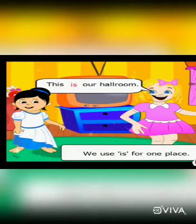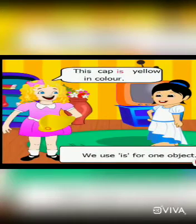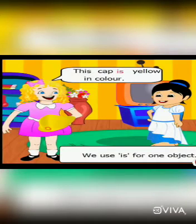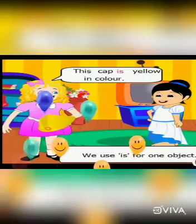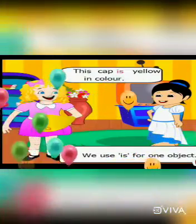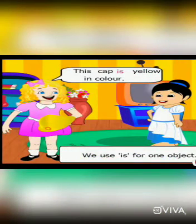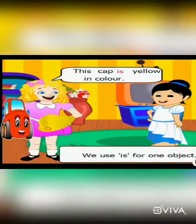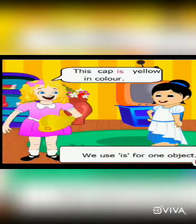For example: 'This park is huge.' Ritu says: 'This cap is yellow in color.' She is talking about a cap — one object — so she uses 'is'. We use 'is' after a singular noun, that is, the name of one person, one object, or one animal. For example: 'The car is red.' When we talk about many objects, we don't use 'is'.